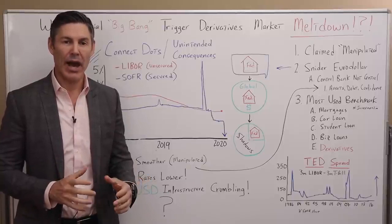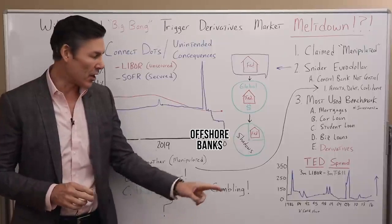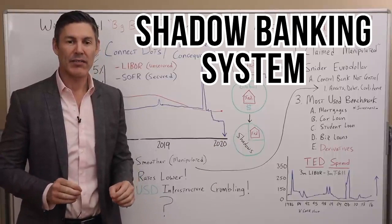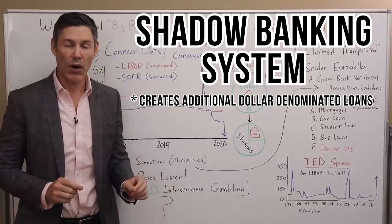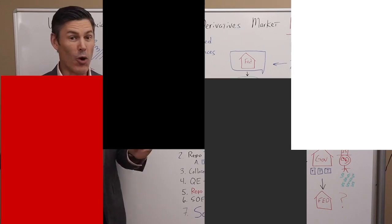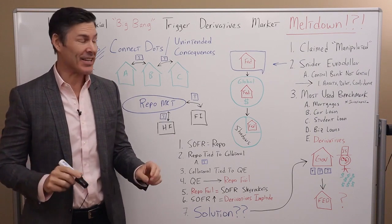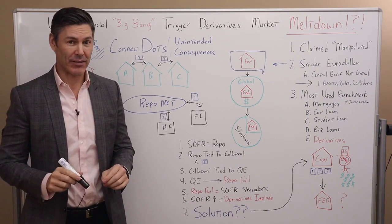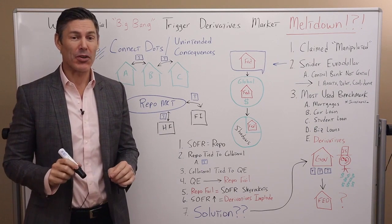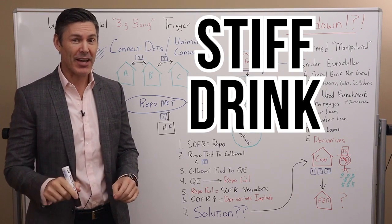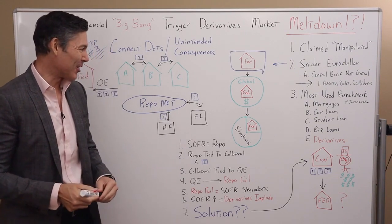When I'm talking about 'they,' I'm talking about the banks that operate outside of the Fed's control — these offshore banks that operate in the shadows, the shadow banking system that creates additional dollar-denominated loans and therefore additional dollars. But wait, there is more. We haven't even begun to connect all the dots. So let's dive down this rabbit hole — if you haven't poured yourself a good stiff drink, now's the time. Sit down and buckle up.